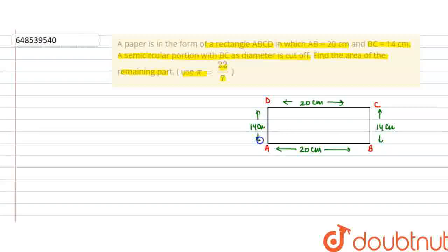Now the question says a semi-circular portion with BC as diameter. Taking this as diameter, a semi-circular portion has been cut off. So what will the remaining part be? It will be this shaded part. We need to find its area.